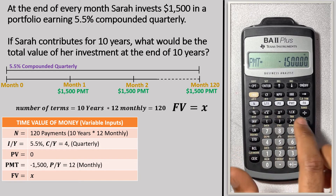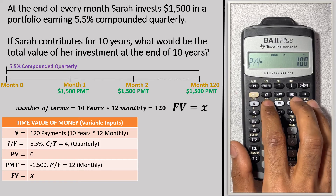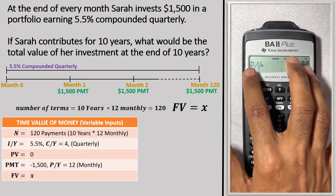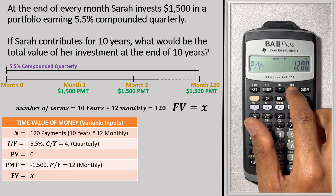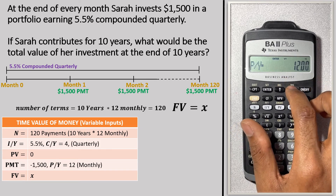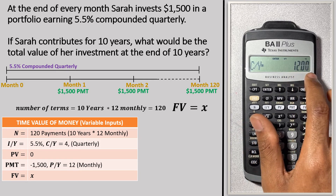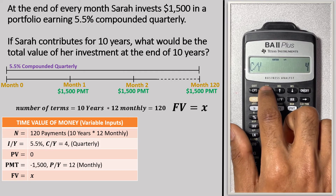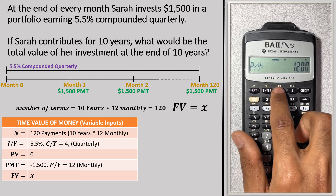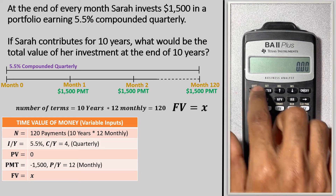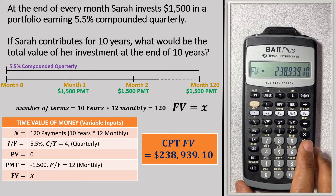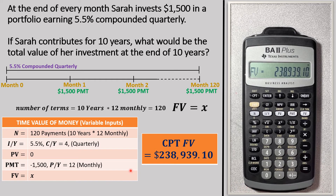Now we input P/Y and C/Y. Press 2nd → I/Y to access that screen. Set P/Y = 12 and press Enter. Note the calculator defaults C/Y to 12 as well, so we must change it — press 4 and Enter for C/Y. Now press 2nd → QUIT, then CPT → FV. The future value of Sarah's investment equals $238,939.10. Therefore, the total value of her investment at the end of 10 years is $238,939.10.